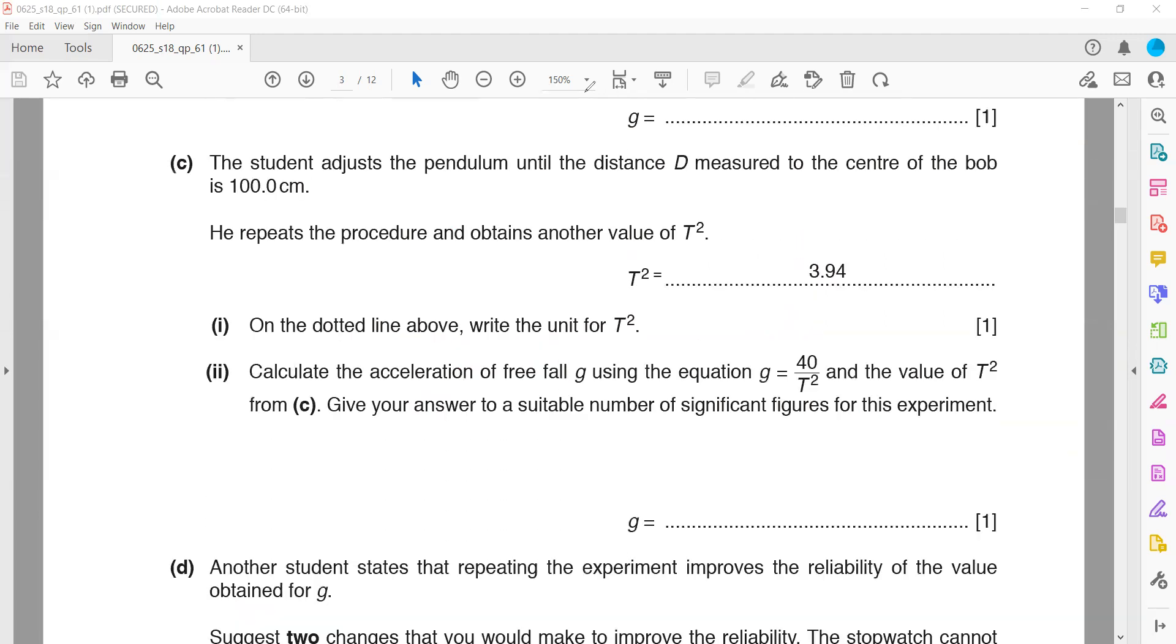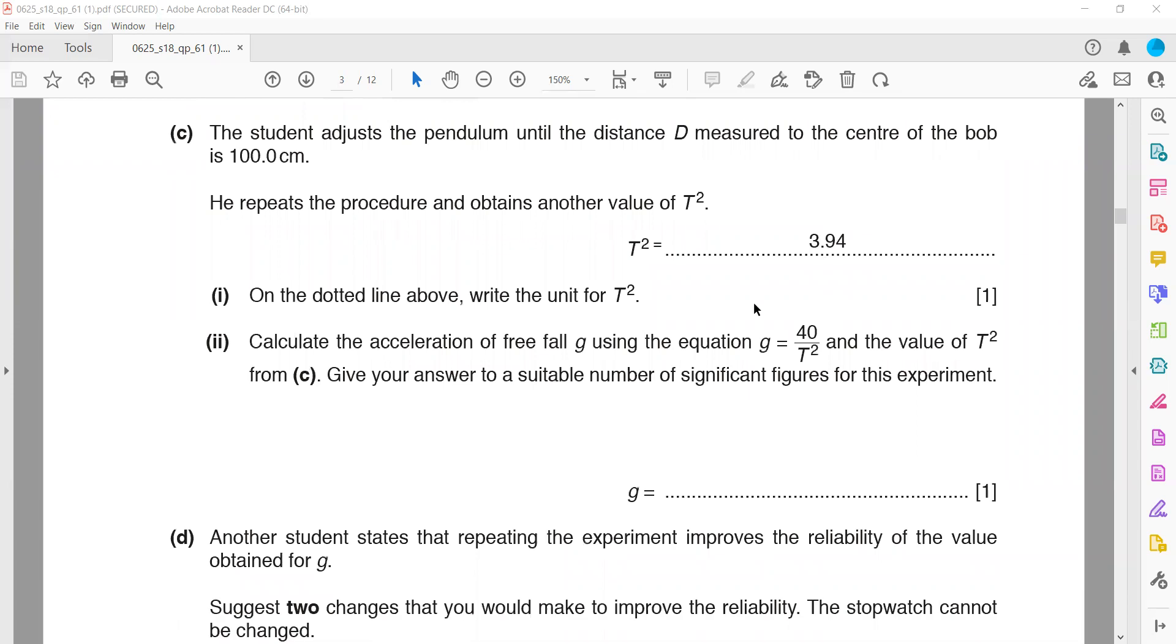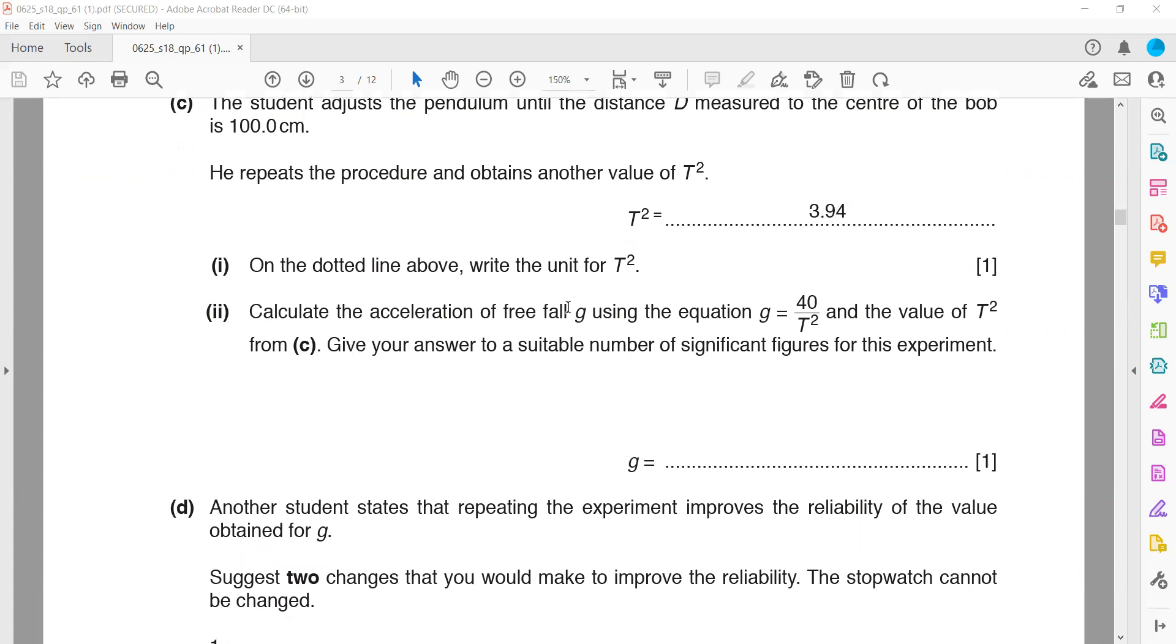Next part: The student adjusted the pendulum until the distance d measured from the center of the bob is 100 centimeters. He got the value for T². Write the value of T² and calculate the acceleration of free fall.